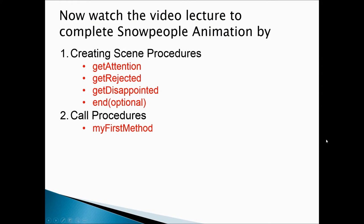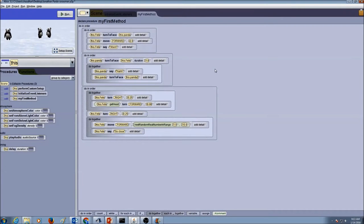Watch the video lecture to complete the snow people animation by creating scene procedures: getAttention, getRejected, getDisappointed. The end is an optional procedure. Once you are done creating your procedures, you will call them in myFirstMethod. I will create a procedure for the scene and call it in myFirstMethod.